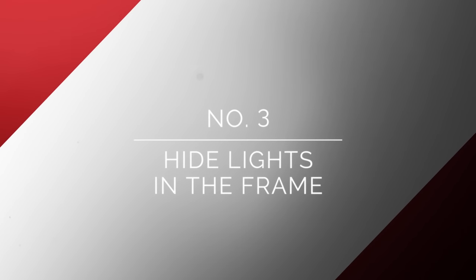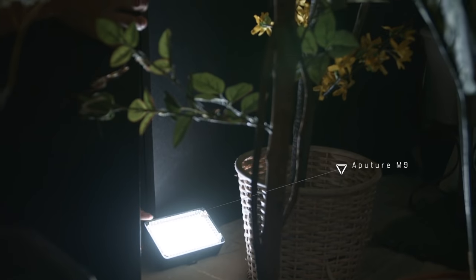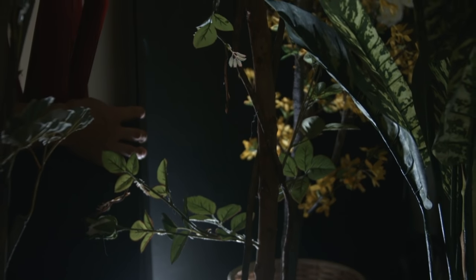So our third method of hiding lights, what would that be? So what we also did is we hid lights in the frame. What we did is we took small LED panels, and we placed them behind the foliage that was behind you to create separation between the background. So that's literally hiding lights in the frame.